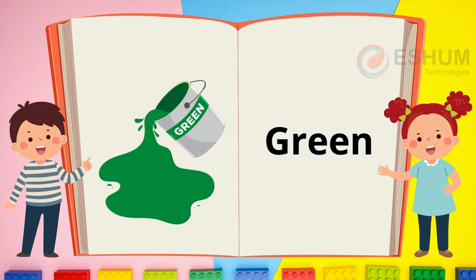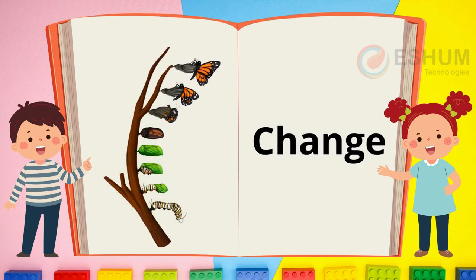Green. You see the color green. Do you like the color green? What is green around you now? Change. This means to become something different. In the picture you see a caterpillar change into a butterfly. What other things change?